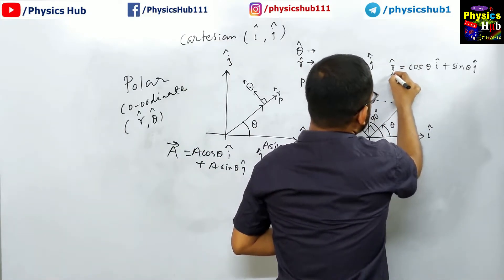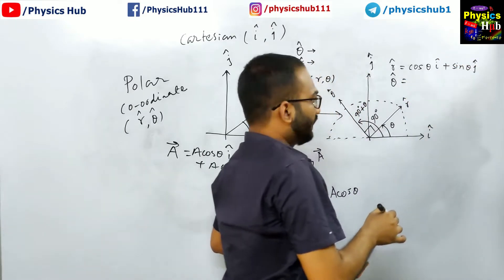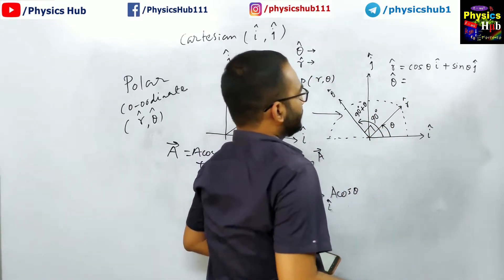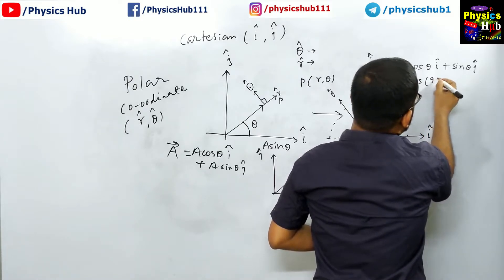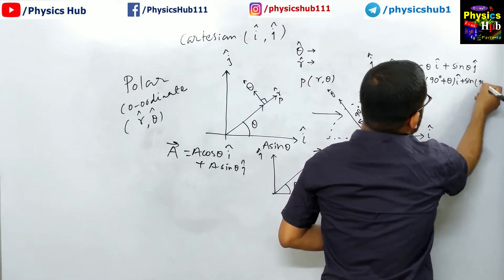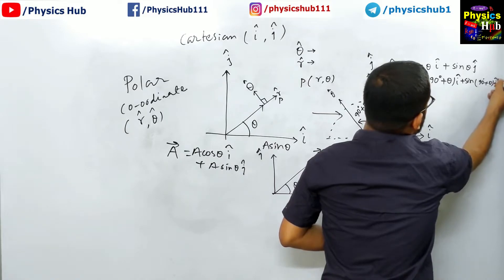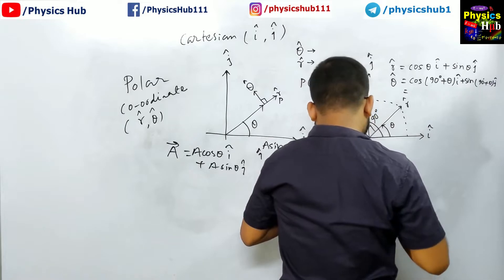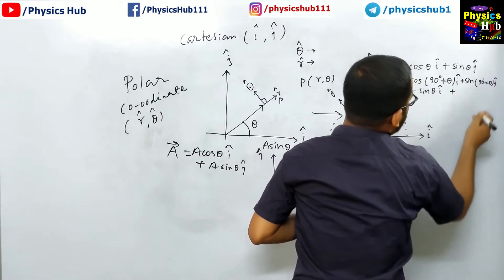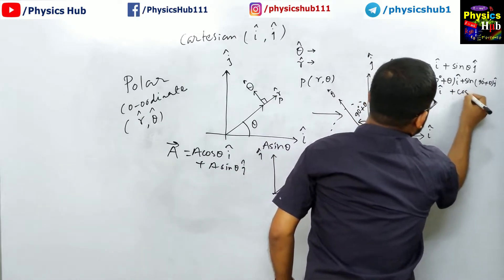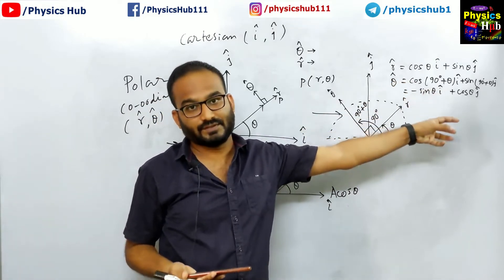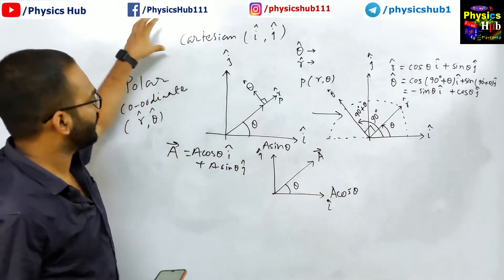We have expressed r cap in terms of i cap and j cap. Now for theta cap: since the angle between r cap and theta cap is 90 degrees, we replace theta with 90 degrees plus theta. So theta cap equals cos(90° + theta) i cap plus sin(90° + theta) j cap. Now cos(90° + theta) equals minus sin theta, and sin(90° + theta) equals cos theta. Therefore, theta cap equals minus sin theta i cap plus cos theta j cap. We have now expressed both r cap and theta cap in terms of the Cartesian unit vectors i cap and j cap.